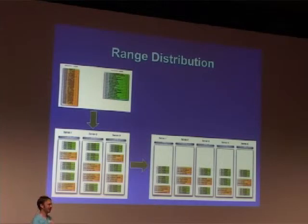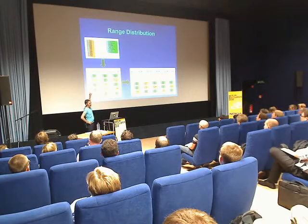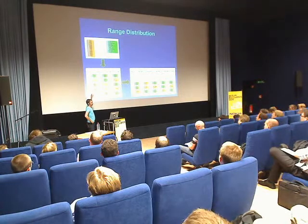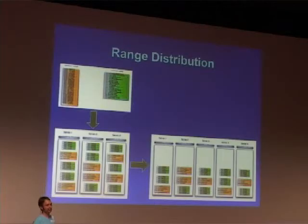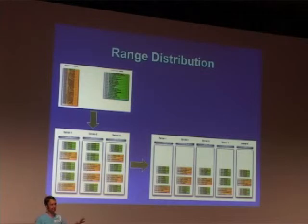I need to point out a weakness of the Hypertable design. Because you have a single machine managing each range, if the machine goes down, there's a period of time when that range will be unavailable while the system figures out that the machine went down and needs to reassign management of those ranges to other machines. So during periods of failure, there can be latency spikes.